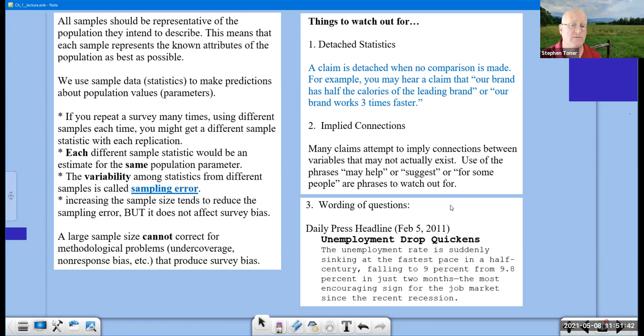You also have to watch out for the wording of questions. This comes from a local newspaper back in 2011. The unemployment drop quickens. The unemployment rate is suddenly sinking at the fastest pace in the past half century, falling to 9% from 9.8% in just two months. You look at that and go, oh, the unemployment rate drop quickens. Unemployment is bad, but if it's dropping, that's good. The way it's worded can be very confusing.